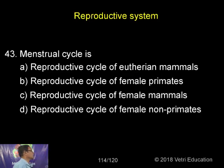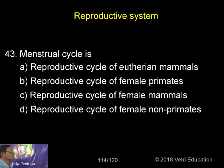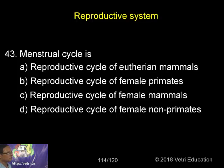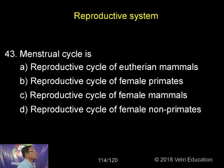The menstrual cycle is the reproductive cycle of eutherian mammals, specifically the reproductive cycle of female primates. In the case of non-primates, the cycle is called the estrus cycle, or heat period. So, the reproductive cycle of female primates is called the menstrual cycle, while in non-primates it is called the estrus cycle.